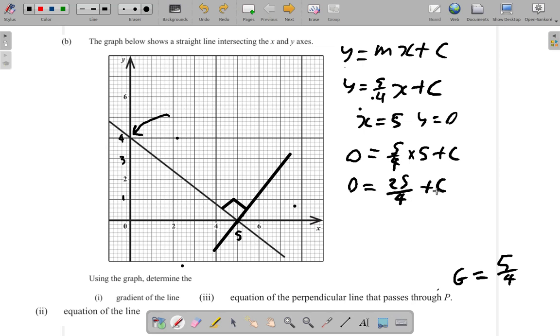What we have is 0 is equal to 25 over 4 plus C. What we can do is subtract 25 over 4 from both sides.